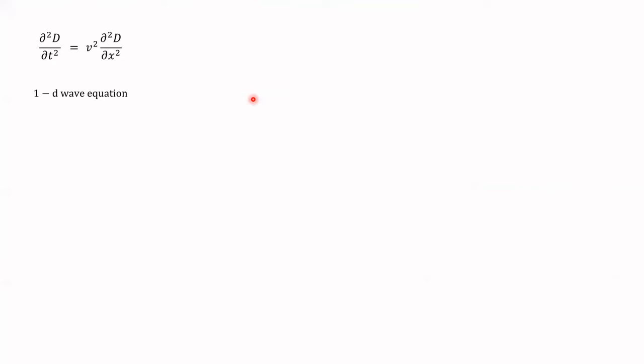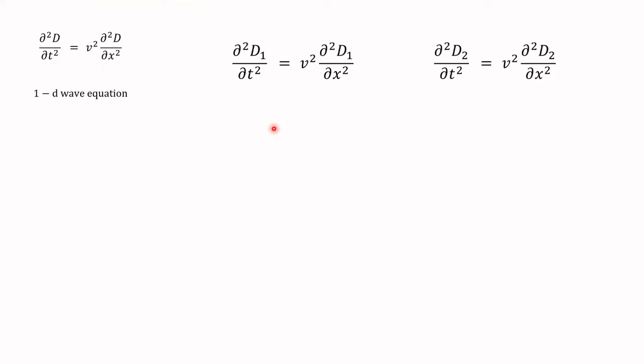If these two pulses exist on a string for which the wave equation is true — remember, we used Newton's second law to analyze a little segment of the string — if those two pulses could actually travel on the string, then both functions D1 and D2, which depend on position and time, should obey the wave equation. Because it's possible that one pulse could be propagating down the string without the other being present. So each of those signals separately satisfies the one-dimensional wave equation.